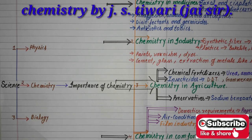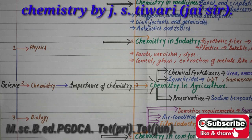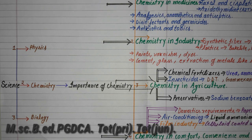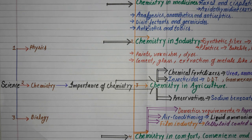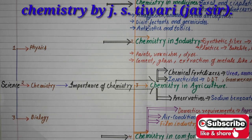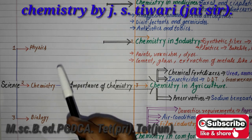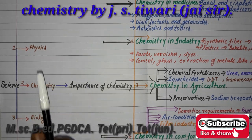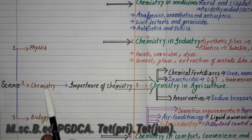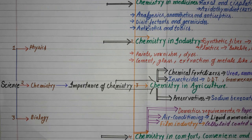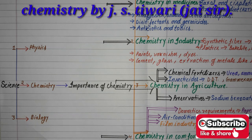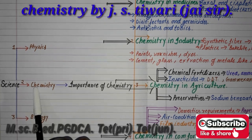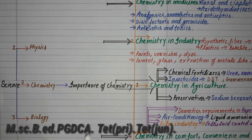As you know, chemistry plays an important role in our daily life, in which some of them are shown here. Science is divided into three main parts: physics, chemistry, and biology. My topic is related to chemistry — that is, the importance of chemistry.